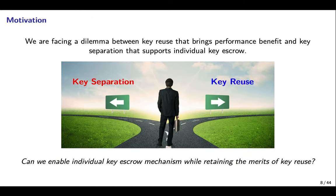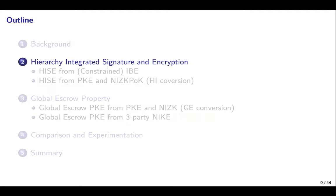As discussed above, we are facing a dilemma between key reuse that brings performance benefits and key separation that supports individual key escrow. An intriguing question is: can we enable individual key escrow mechanism while retaining the merits of key reuse? To address this question, we propose a new cryptographic primitive called Hierarchy Integrated Signature and Encryption.